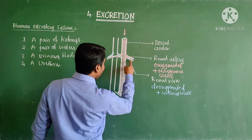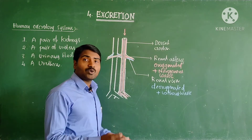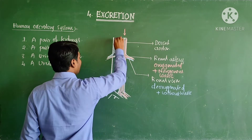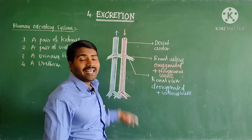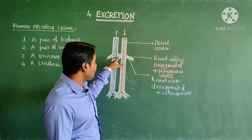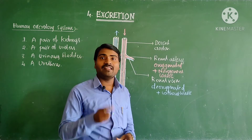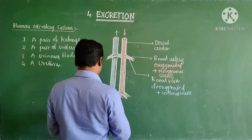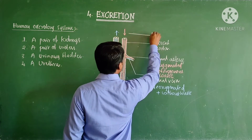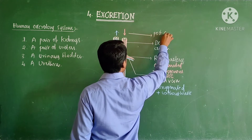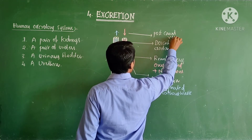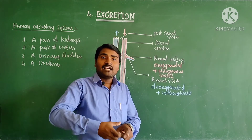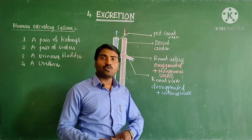The renal veins from both kidneys together form a major vein called the vena cava. Blue color indicates deoxygenated blood, and all the veins together form this major vein — the post vena cava — which collects blood from the kidneys and sends it towards the heart.